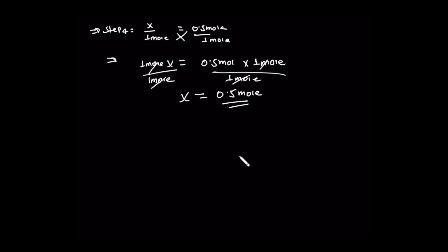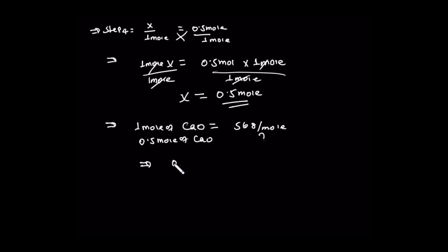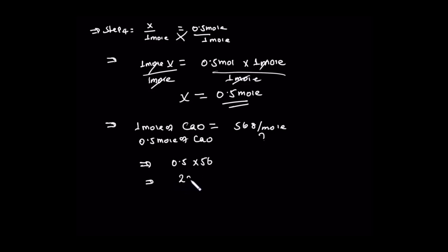The mole of calcium oxide is 1 mole. The molar mass of calcium oxide is 56 grams per mole. So we call it mole by mole. This is the mole of calcium oxide — so how many grams of calcium oxide is needed.